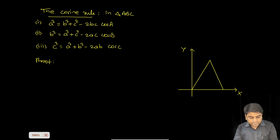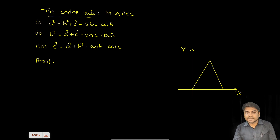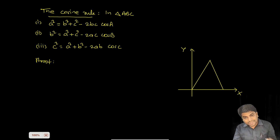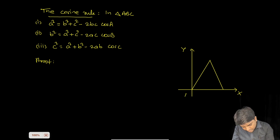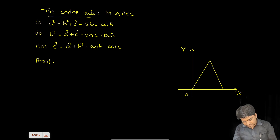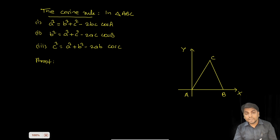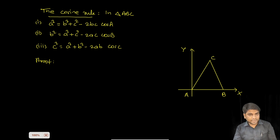Now if we are going to prove the first one, that is a² = b² + c² − 2bc cosA, we take angle A at the origin. So write origin as A, and name the other vertices B and C. The side opposite to vertex A has length a.